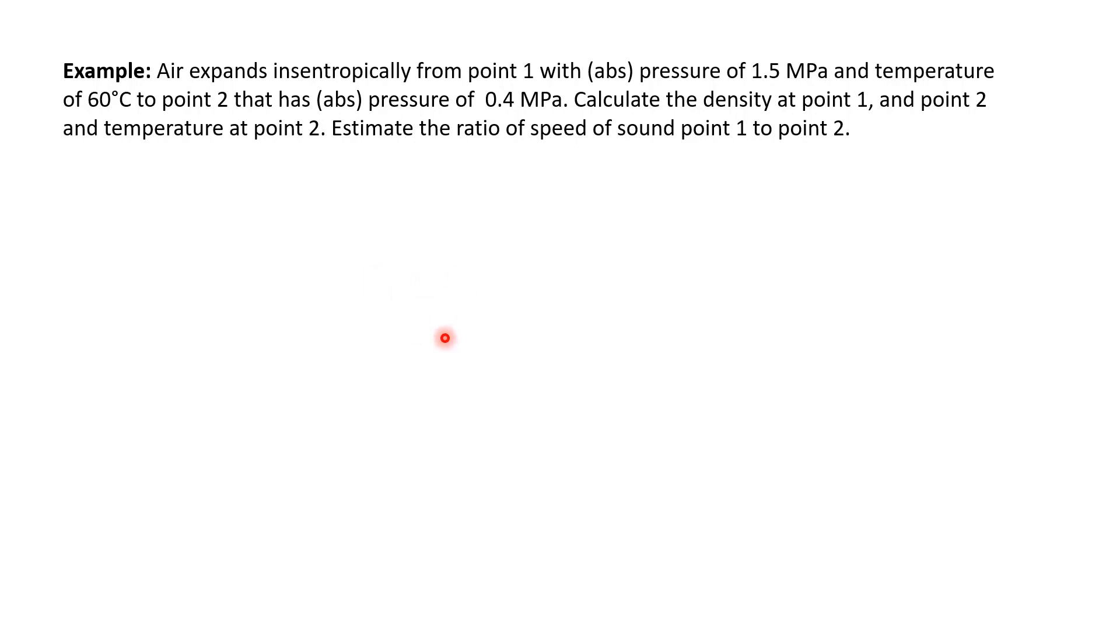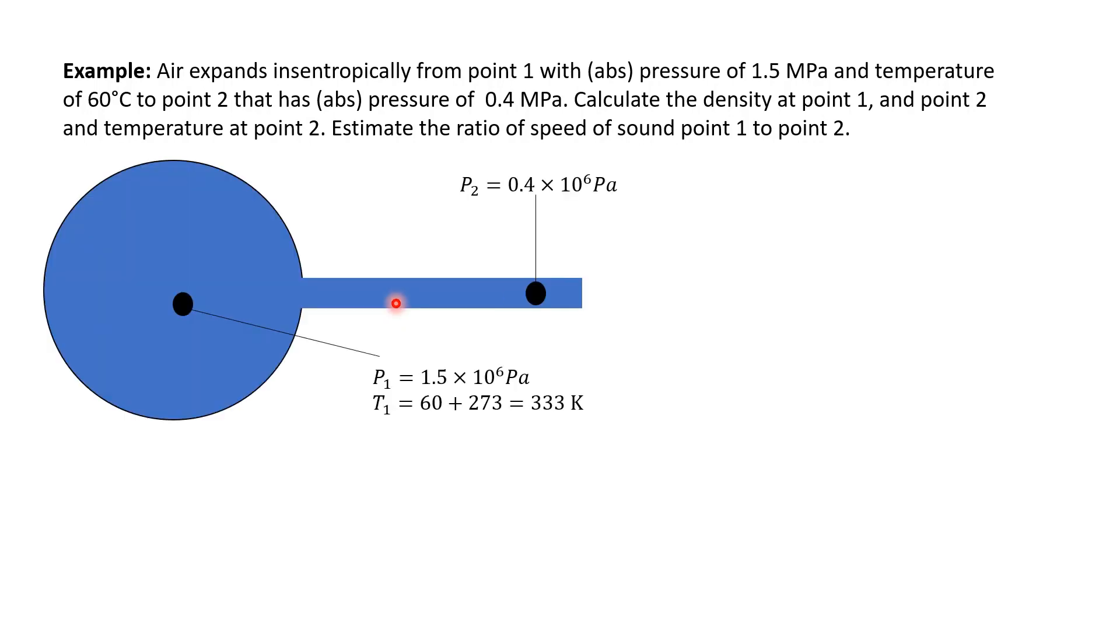So here, if you try to understand the system, look, the air expands from point 1 to point 2. So basically, point 1 is the reservoir. So, that's why here is point 1 and we are given the condition 1.5 MPa and given the temperature. And also at point 2, we also know that it has the pressure of 0.4 MPa and that's it.